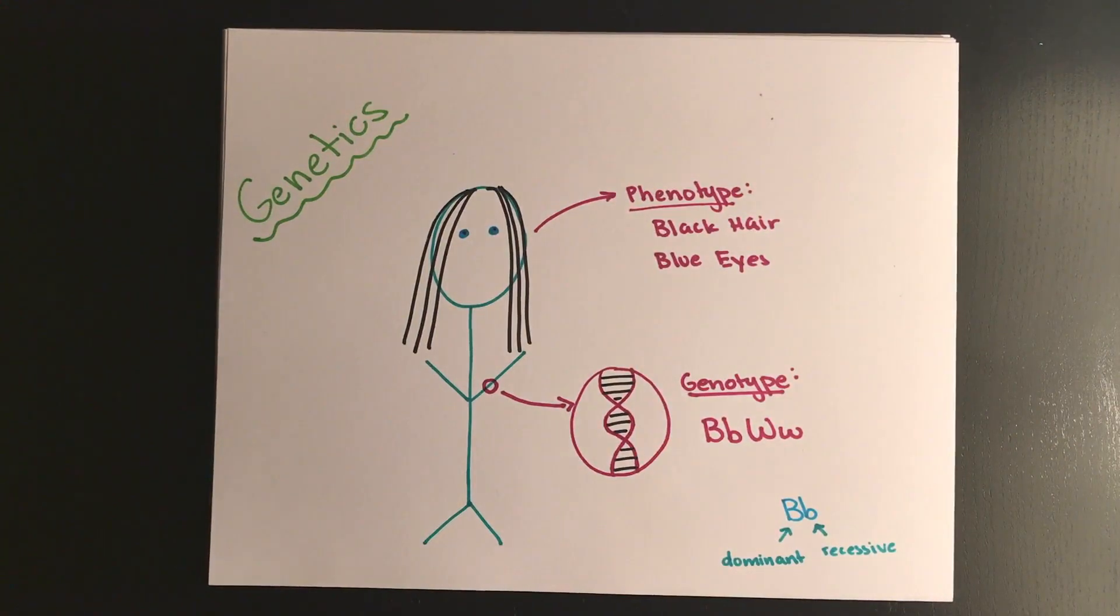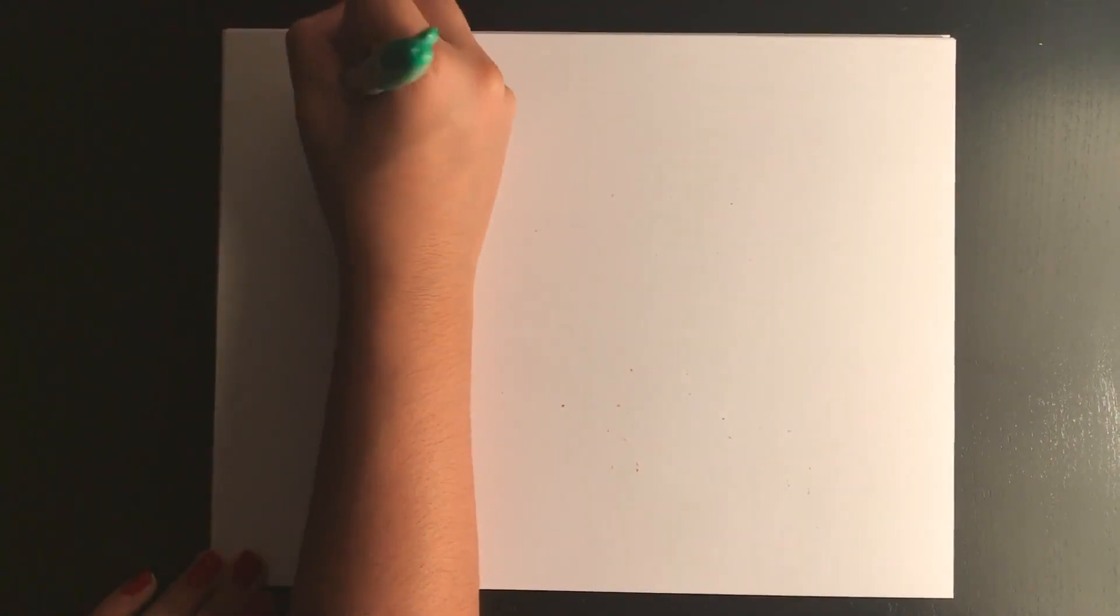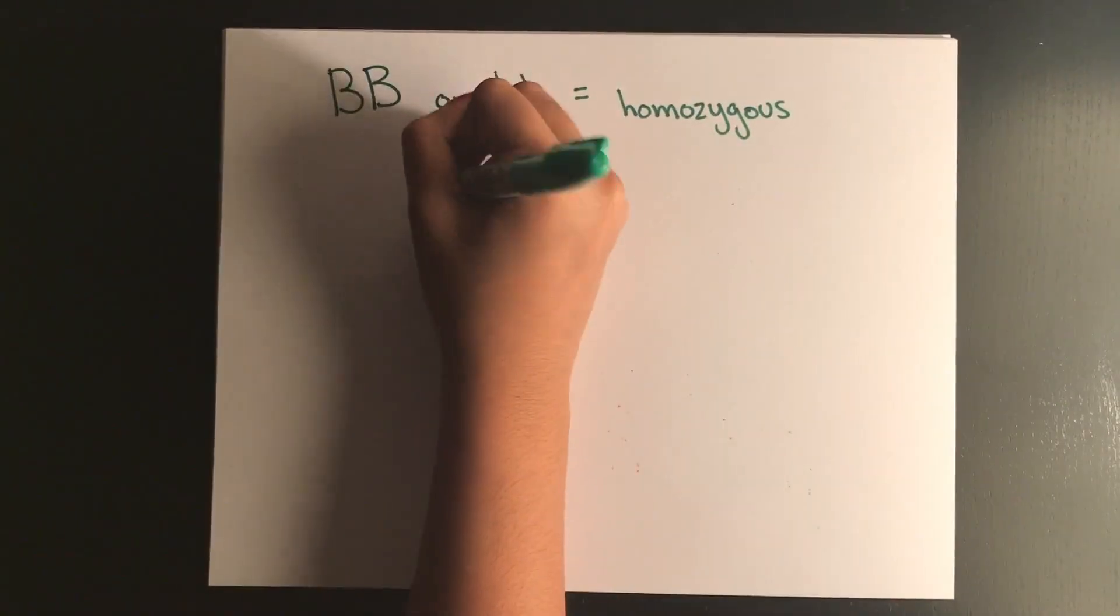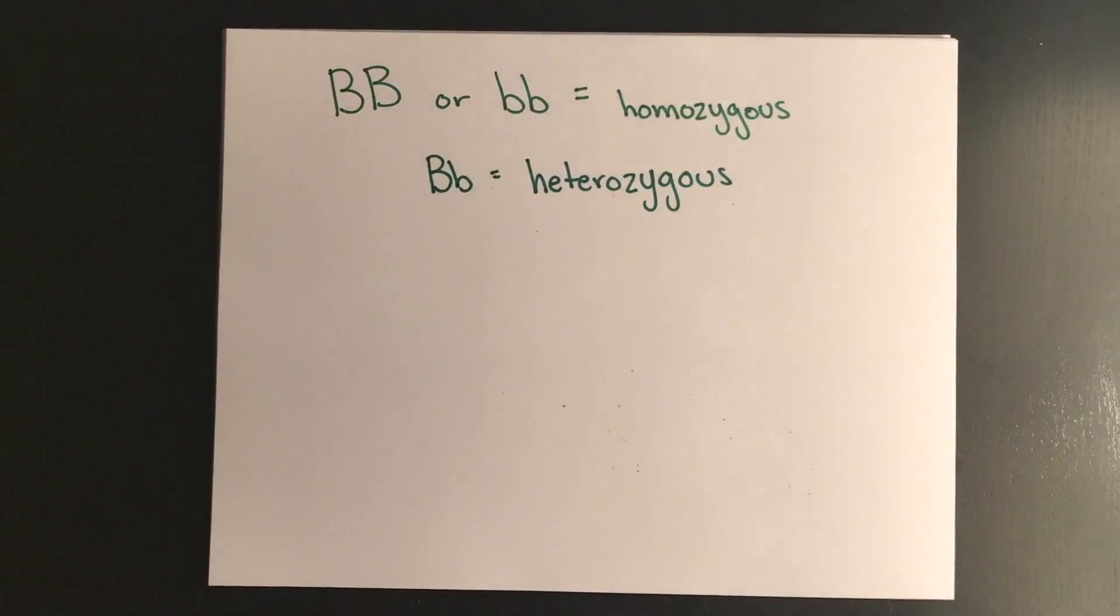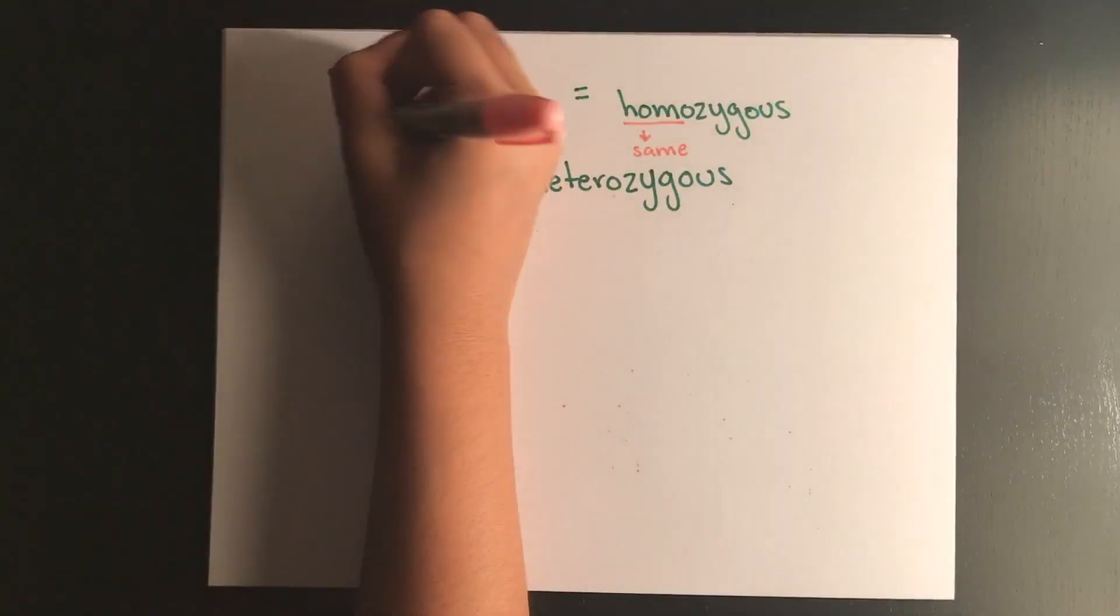Different versions of the same gene are called alleles, and when two alleles are identical we call the pair of alleles homozygous, and when they differ from each other you have a dominant and a recessive, it's called heterozygous.